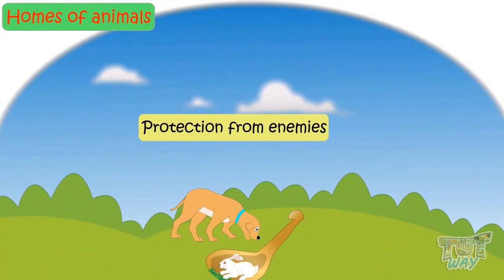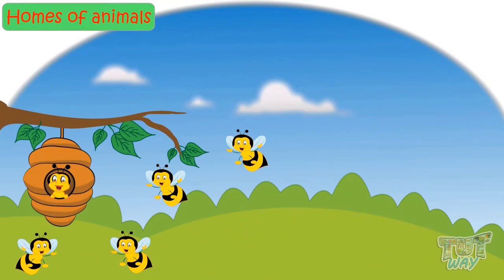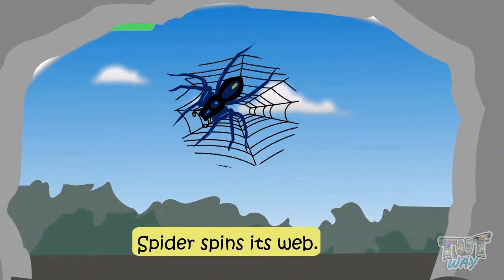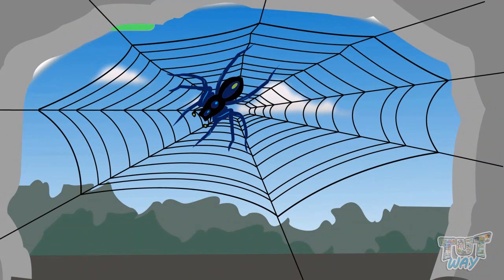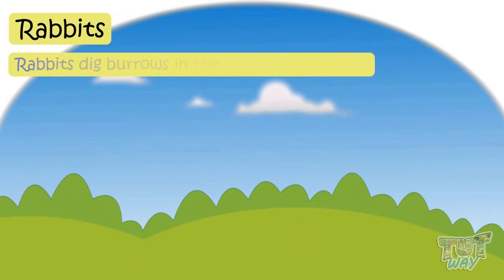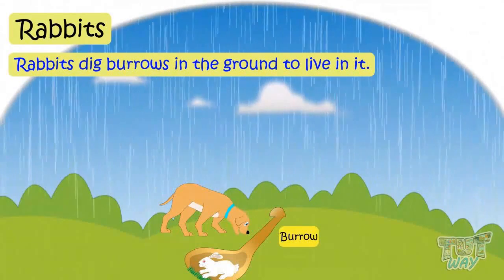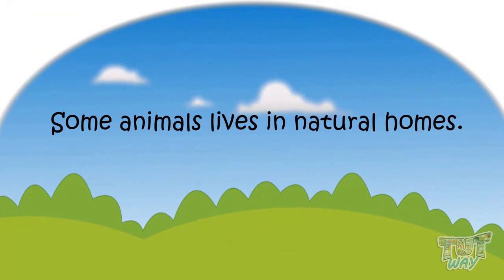Some animals make their own homes. Honey bees make hives and live in them — these are called beehives. A spider spins its web using a sticky material produced by its own body; different types of spiders spin different webs. Birds make different types of nests to lay eggs and bring up their baby birds. Rabbits dig burrows in the ground, which save them from enemies and bad weather.